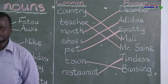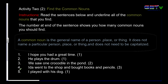Now we move on to activity two: find the common nouns. Instructions: read the sentences below and underline all of the common nouns that you find. The number at the end of the sentence shows you how many common nouns you should find. Remember: a common noun is the general name of a person, place, or thing. It does not name a particular person, place, or thing, and does not need to be capitalized.